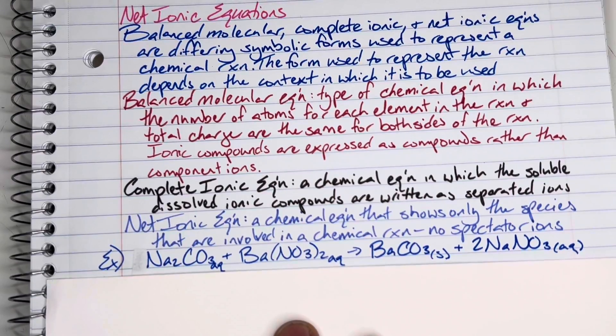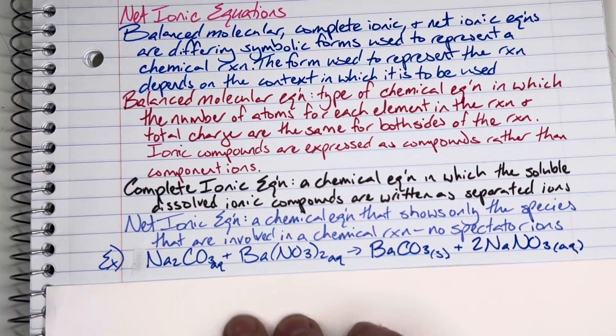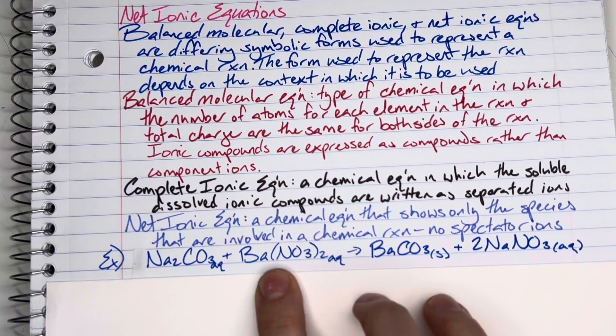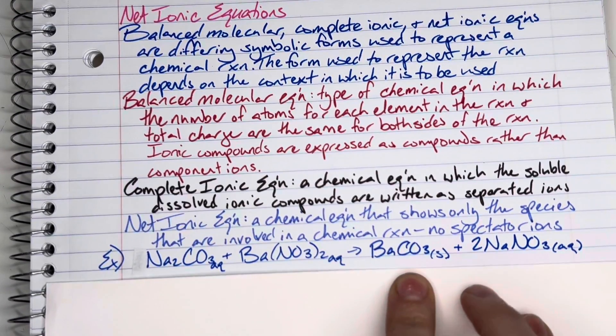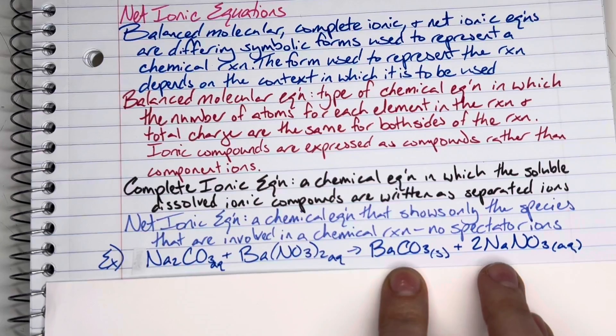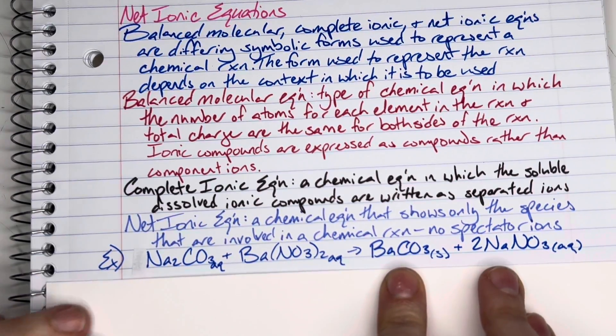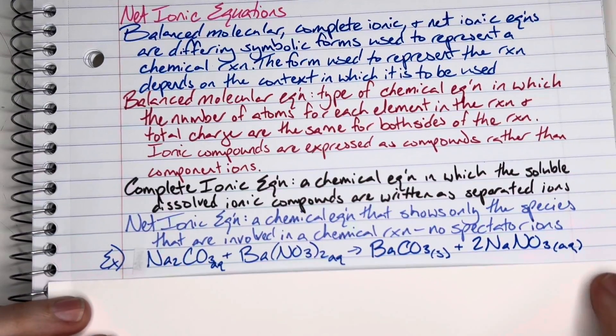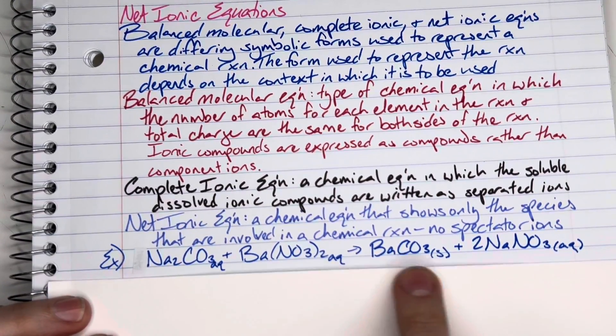For my balanced molecular form, this could look something like this. I have sodium carbonate reacting with barium nitrate, forming barium carbonate and sodium nitrate. We're going to look and notice that the states of the compounds do change for some but not all.